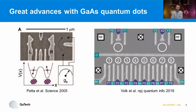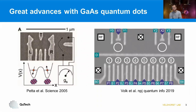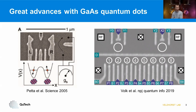Great advancement has been made with gallium arsenide quantum dots. On the left you see a double dot system in GaAs that led to the first works showing current coupling between two quantum dots. In the meantime, we can really scale up to larger arrays — on the right you see a six-qubit system using virtual gates, and it's not too hard anymore to tune up such a device. In one dimension we could continue this game and go to even larger systems.